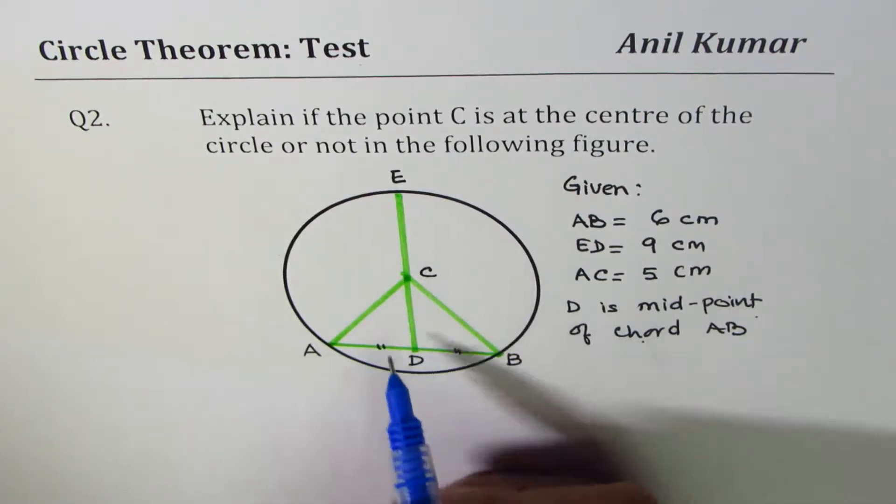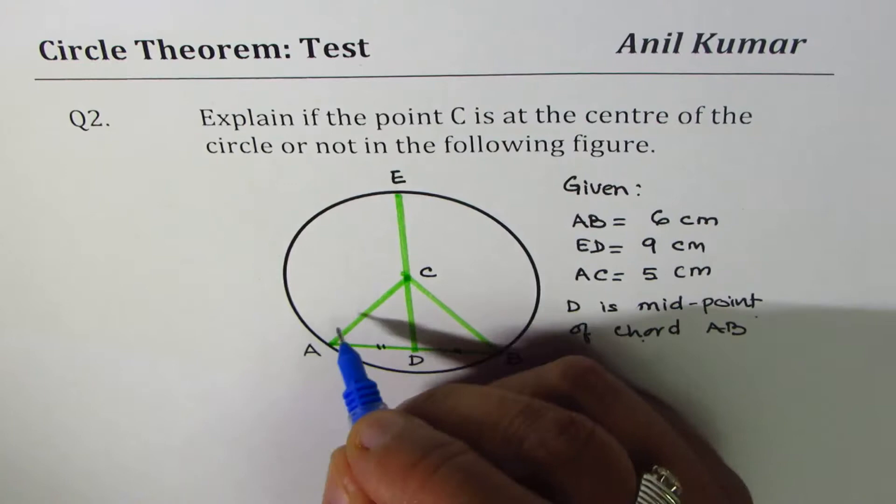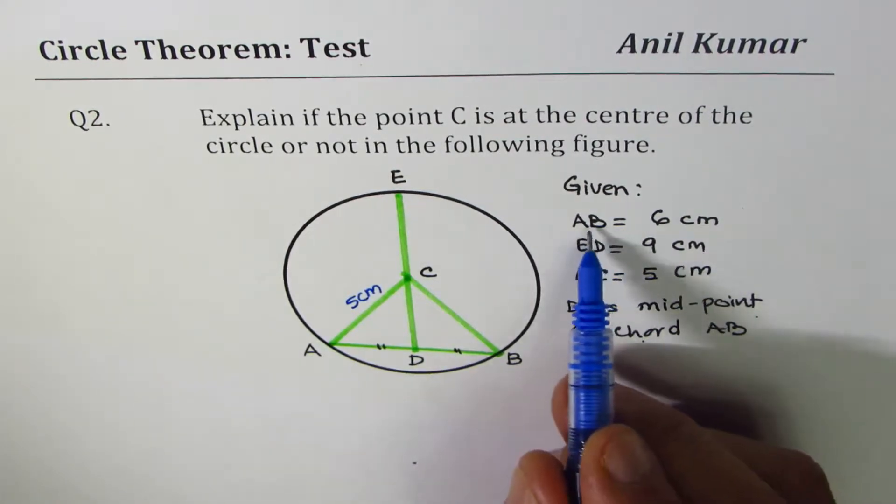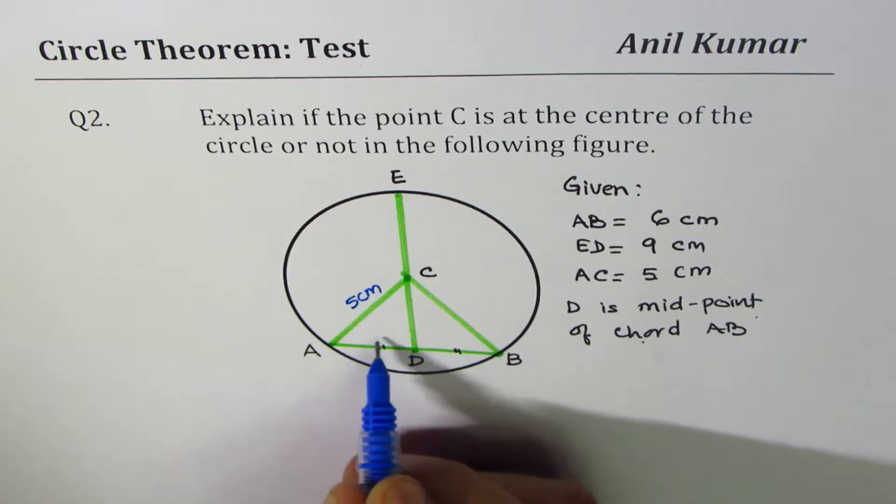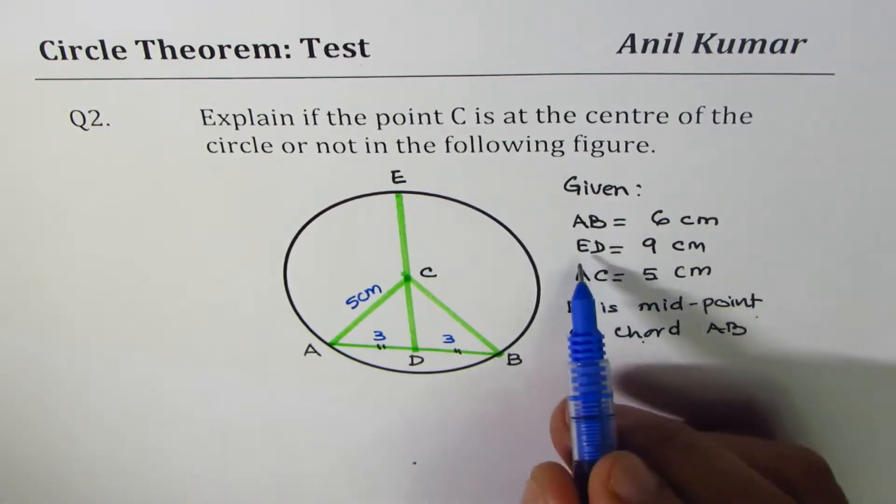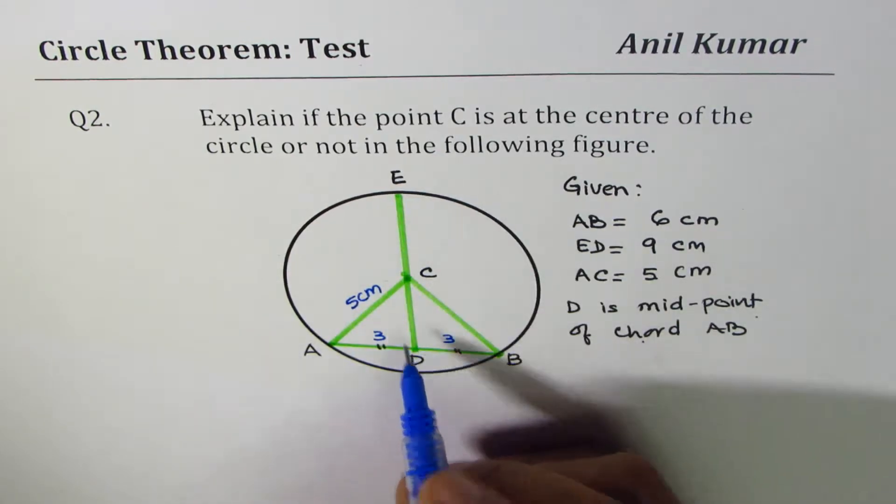Now what we are given here is AC is 5 centimeters. Let me write down here 5 centimeters. AB is 6. So half of 6 will be 3. So let me write 3 and 3. ED is 9. So E to D is 9.